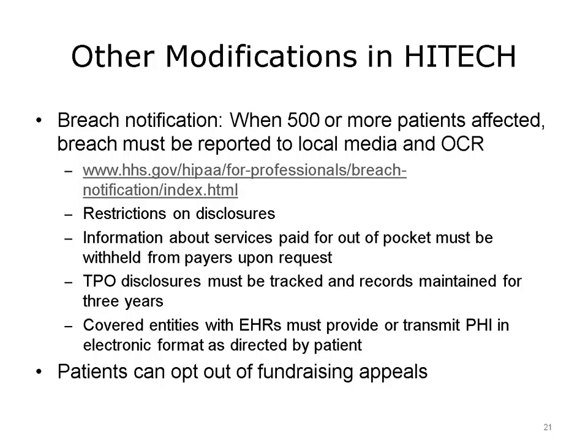There are other modifications to the HIPAA privacy rule under the HITECH legislation. One area concerns breach notification. Patients must be informed, but when the breach exceeds 500 patients, the OCR as well as the local media or local press must be notified. The OCR maintains a webpage that lists all breaches of more than 500 patients. There are also some modifications that allow patients to put more restrictions on disclosures. For example, when patients pay for medical care out-of-pocket instead of through their insurance, they can stipulate that information not be sent to payers. There are also stricter rules for appropriate disclosures of TPO; these disclosures must be tracked and records maintained for three years. In addition, covered entities that have electronic health records have to either provide or, if the patient requests, transmit PHI in electronic format as the patient directs. Finally, one other clause allows patients to opt out of fundraising appeals.